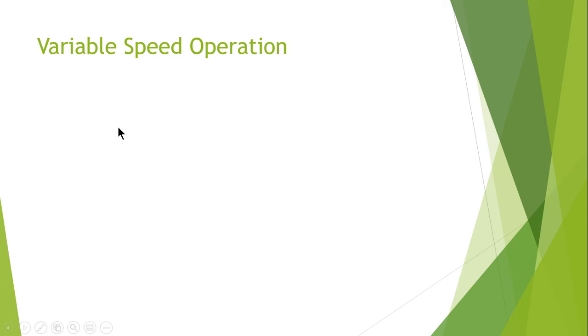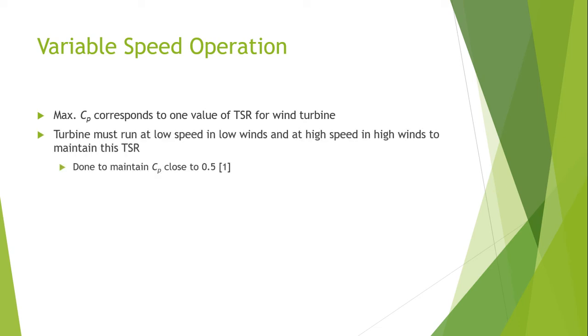Now we will continue with variable speed operation of a wind turbine. Maximum rotor efficiency corresponds to the value of the tip speed ratio. For a certain wind turbine, the turbine must run at low speed in low winds and at high speed in high winds. This is basically an anomaly we cannot change.